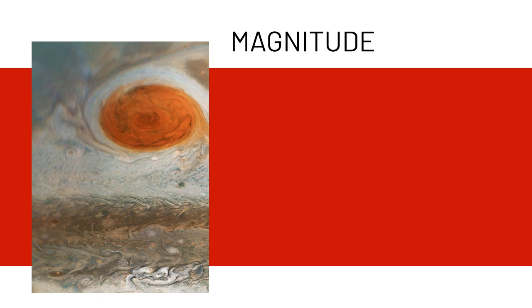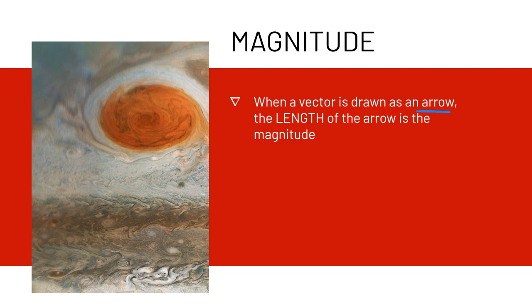So magnitude - when a vector is drawn as an arrow, the length of the arrow is the magnitude, and magnitude is a scalar quantity. A vector has both magnitude and direction, and magnitude is the scalar part of the vector.